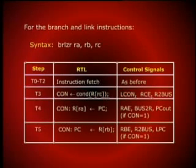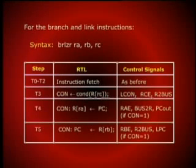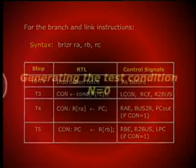For the case of branch on zero, we need two timing steps for execution, whereas we have three timing steps for executing branch and link. Similarly, other instructions on plus and minus could be interpreted in exactly the same way.